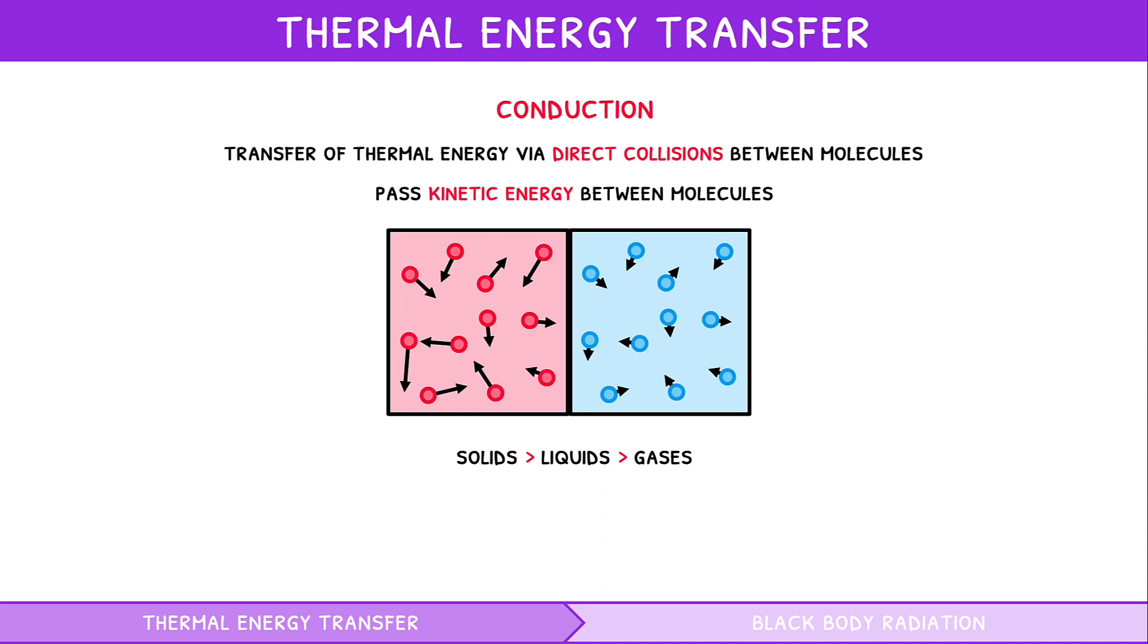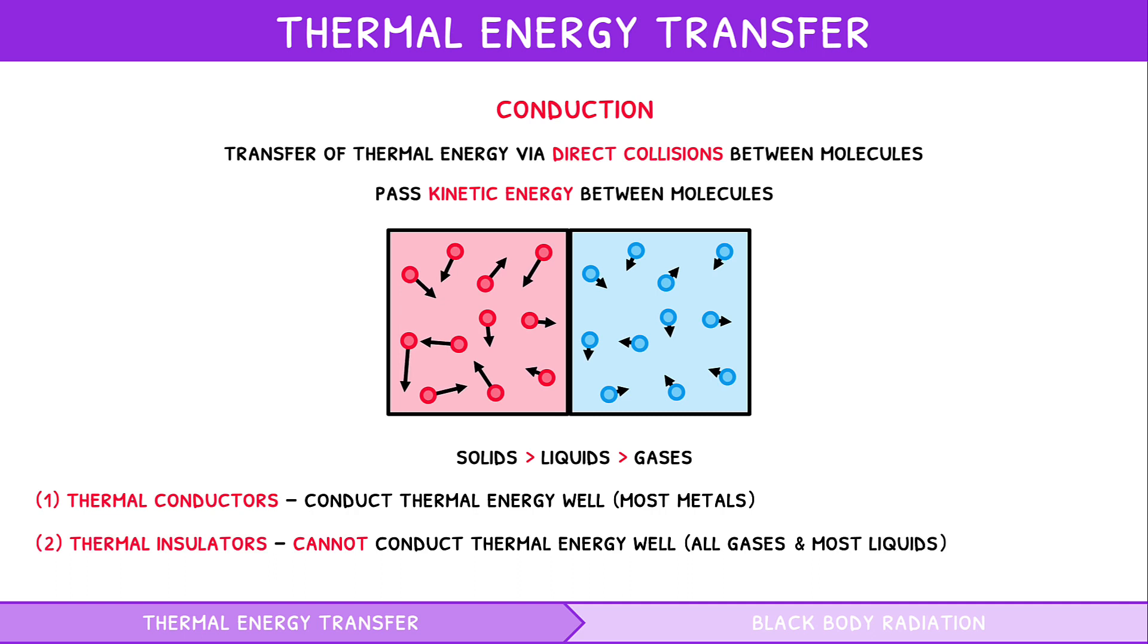Materials that undergo conduction can be classified into two groups: thermal conductors and thermal insulators. Thermal conductors are materials that can conduct thermal energy well. Most metals are thermal conductors. Thermal insulators are materials that cannot conduct thermal energy well. All gases and most liquids are thermal insulators.